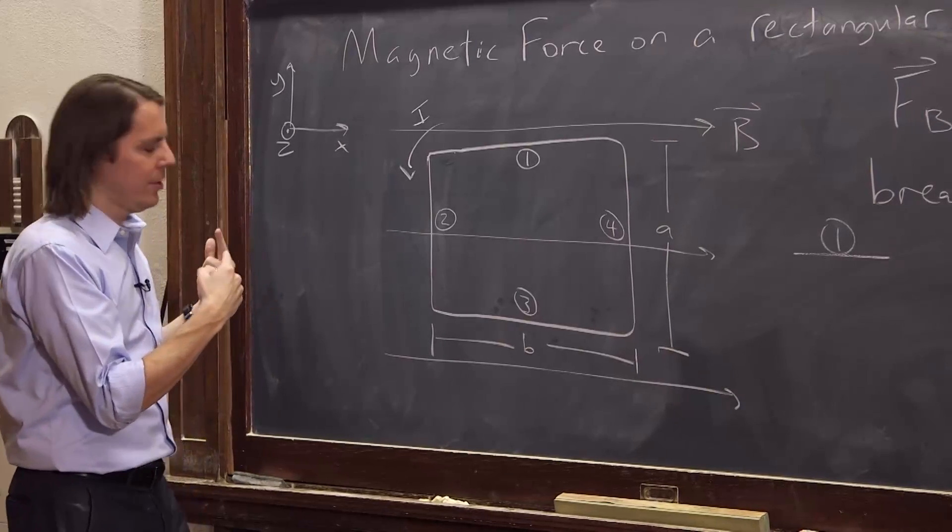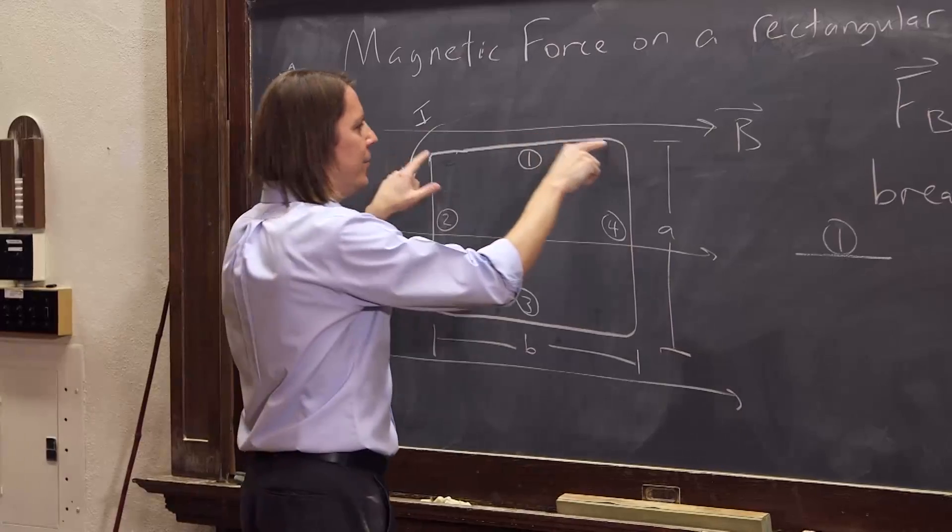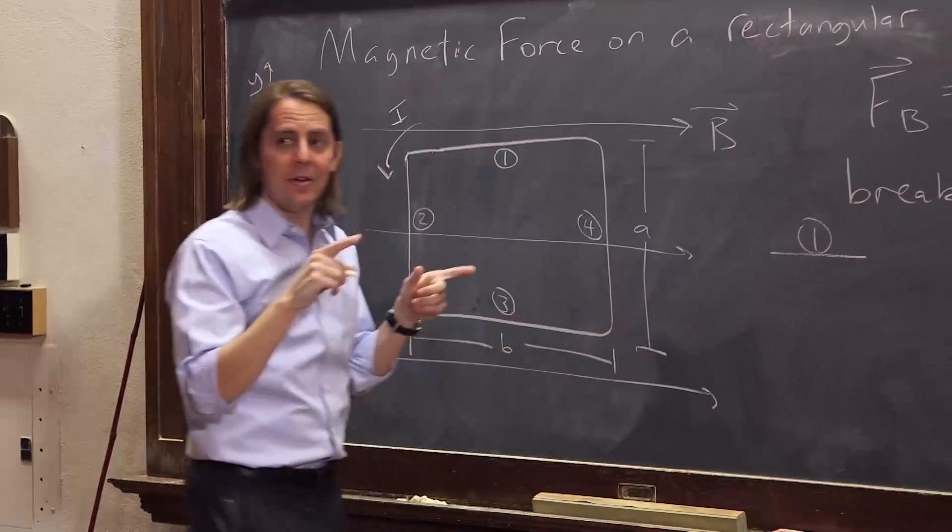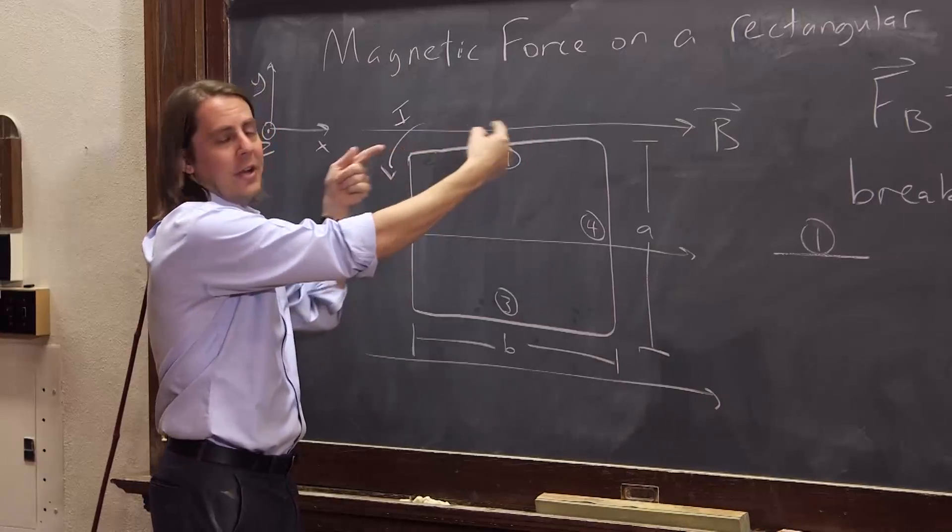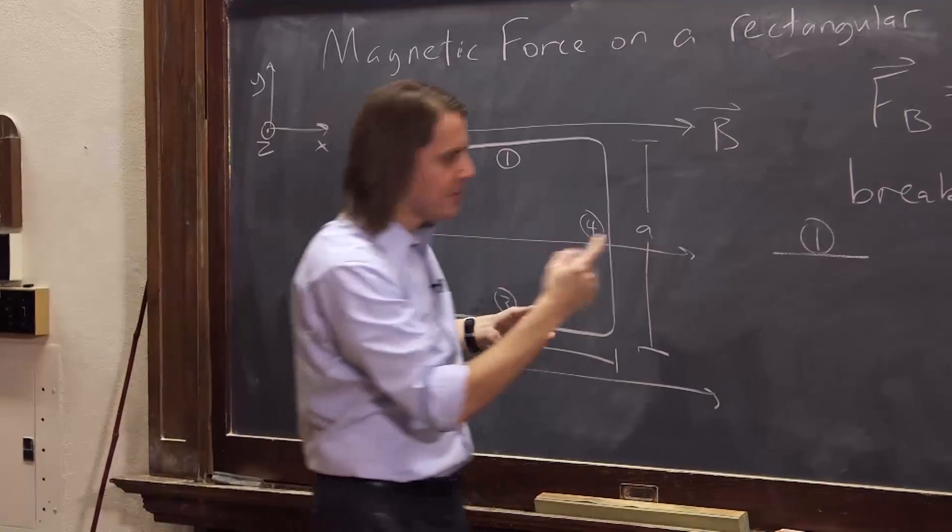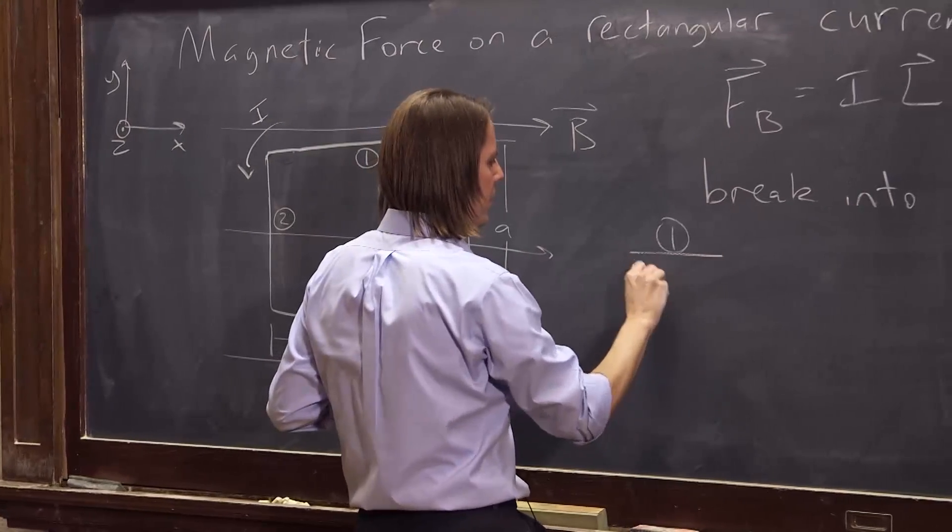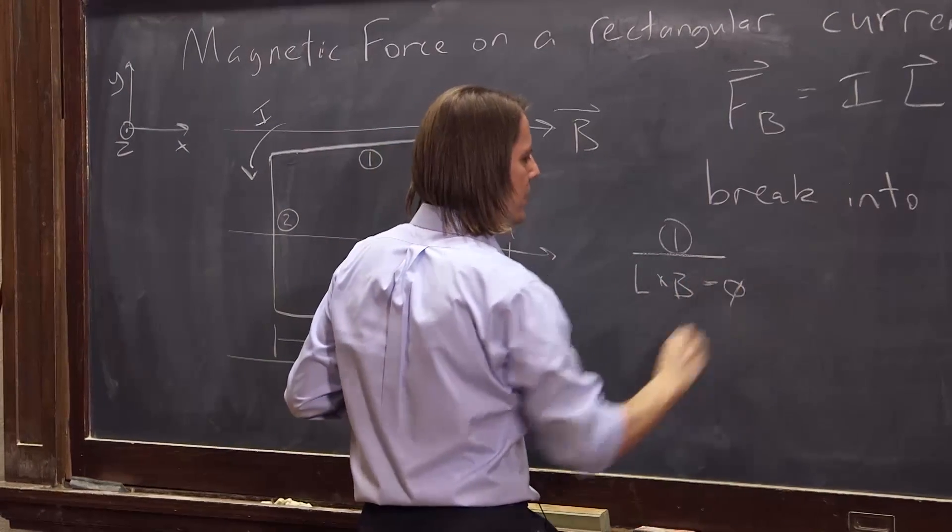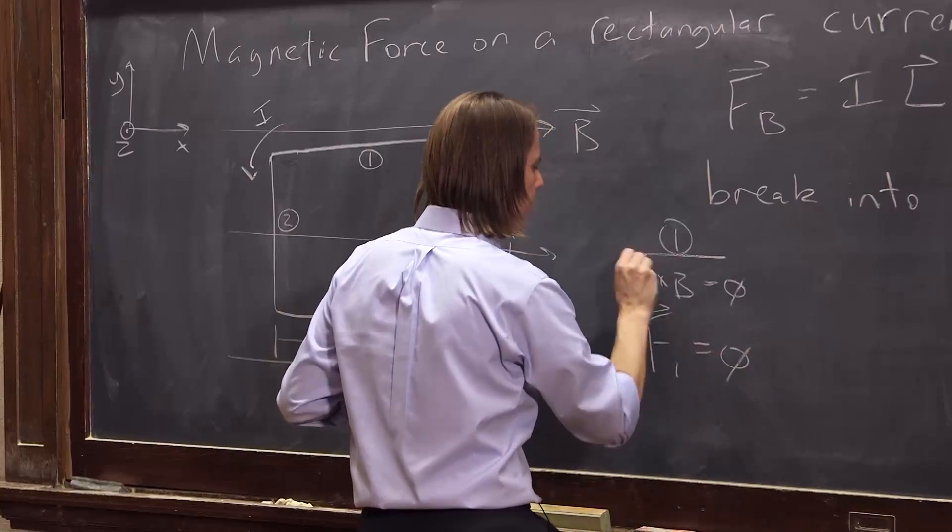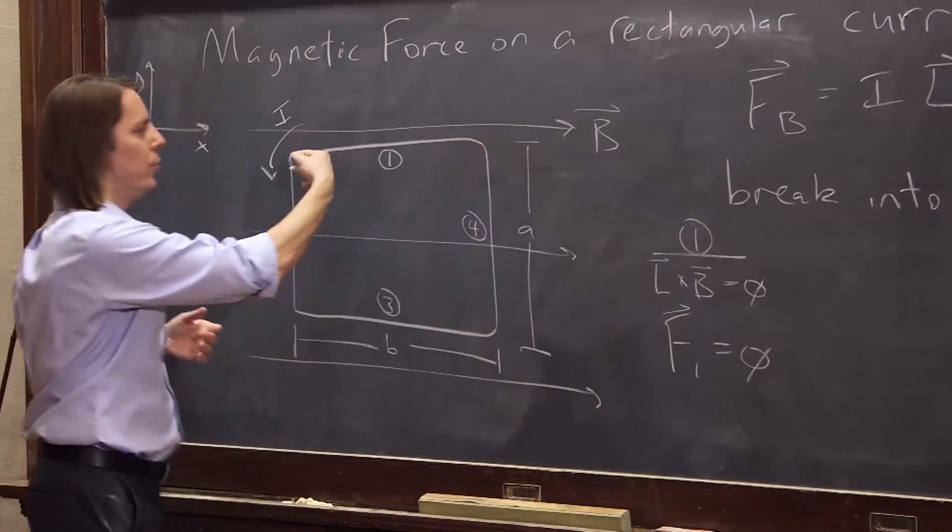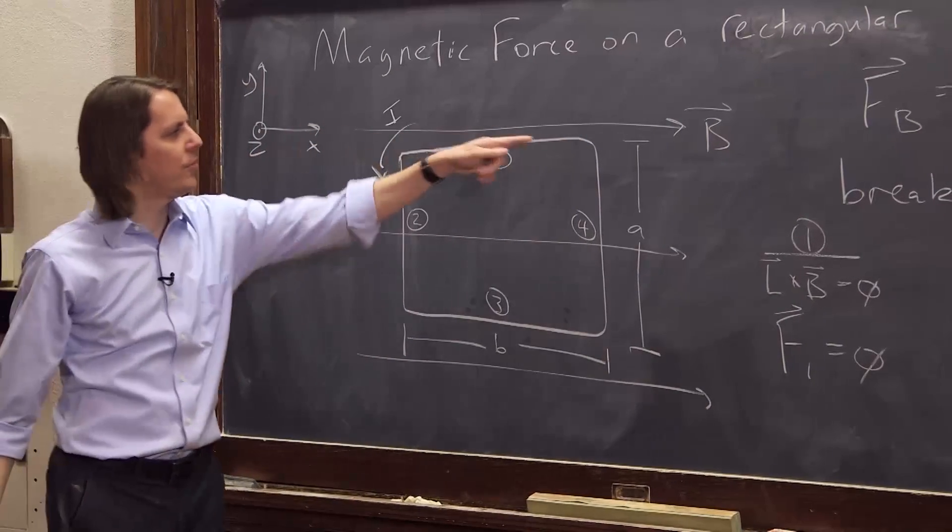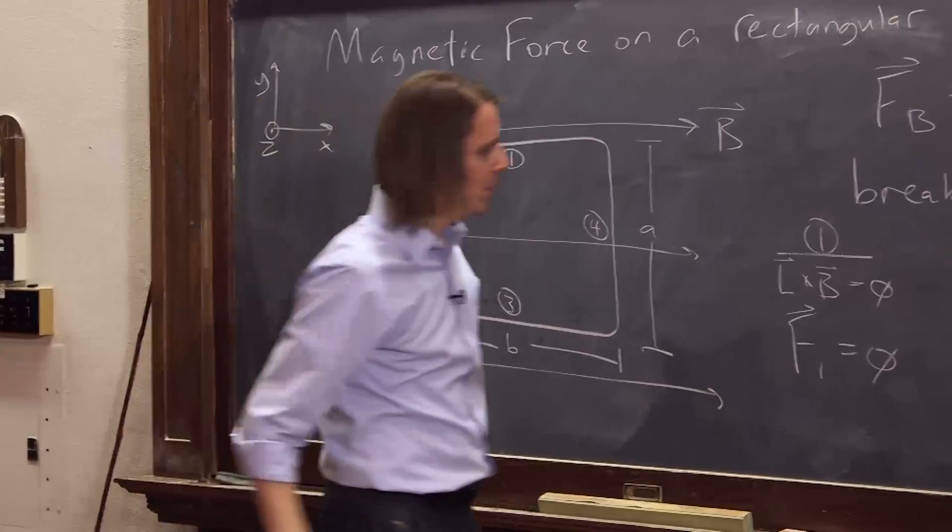Theta between these two vectors is 180 degrees. Sine of 180 degrees is zero. So basically, since L cross B equals zero, F_1 equals zero. By L, I mean for the whole side. So no force on this segment.